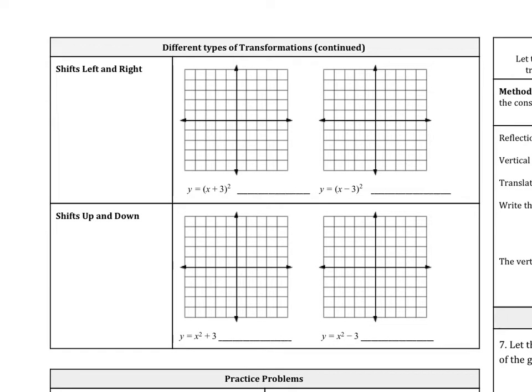So let's look at this example here. We have y equals (x + 3) squared. So how is that translated? So that is translated left 3, right? So what's opposite, so a positive 3 means it's left 3.